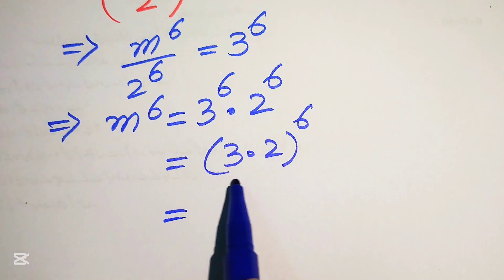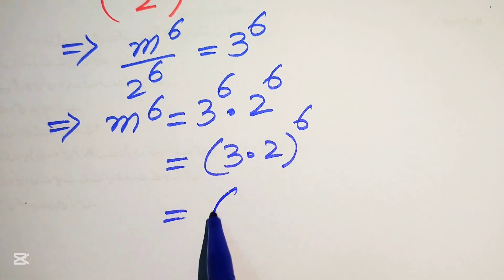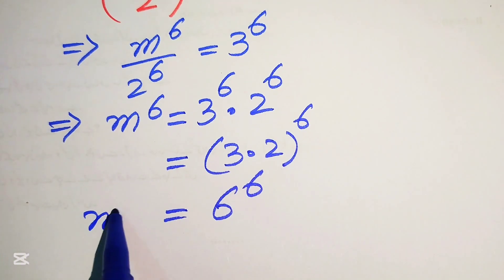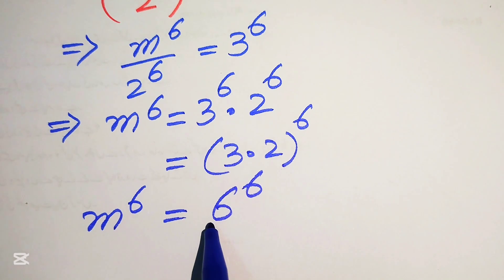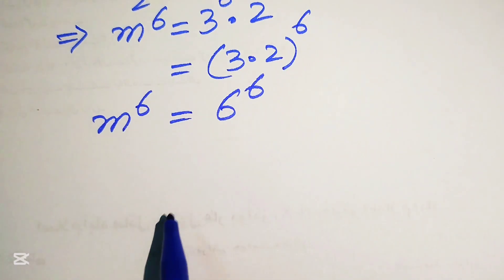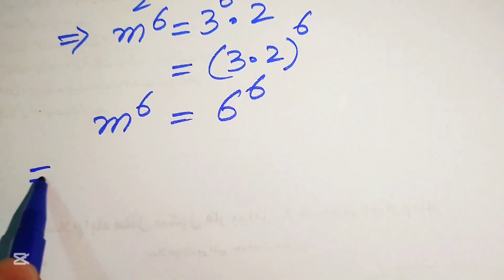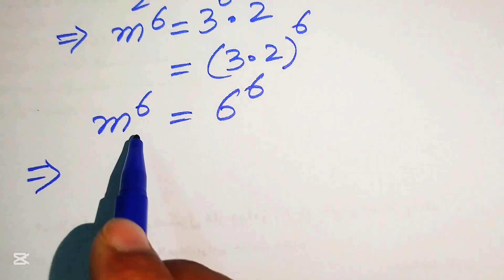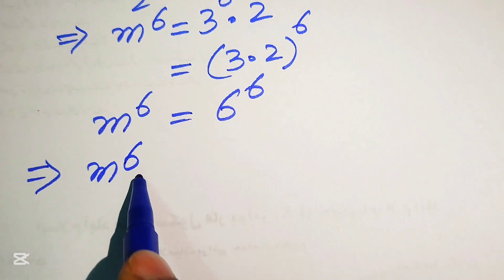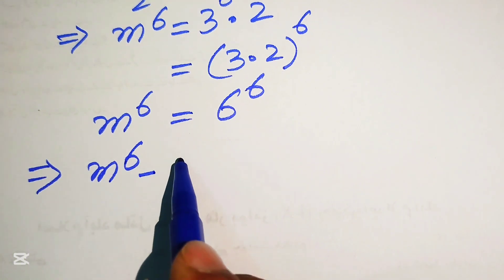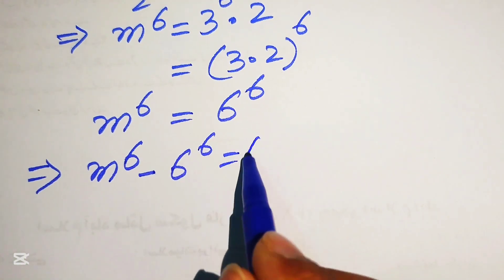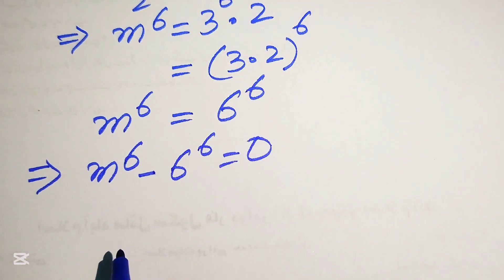So finally we get m to the power of 6 equals to 6 to the power of 6. Moving 6 to the power of 6 to the left hand side, it will be written as m to the power of 6 minus 6 to the power of 6 equals to 0.